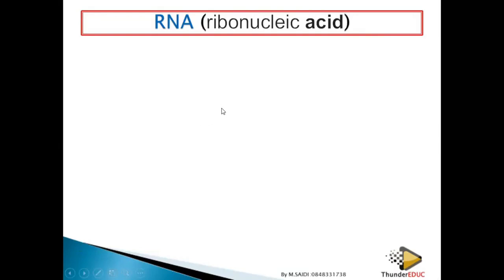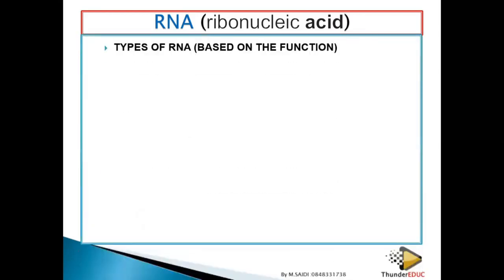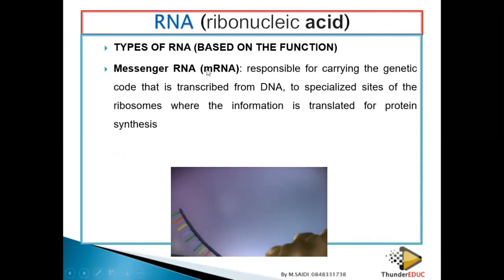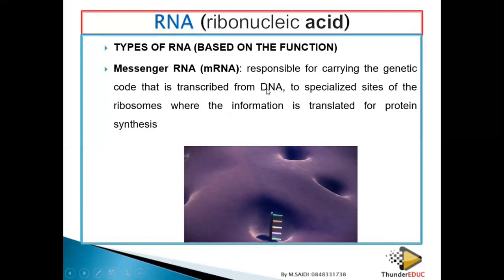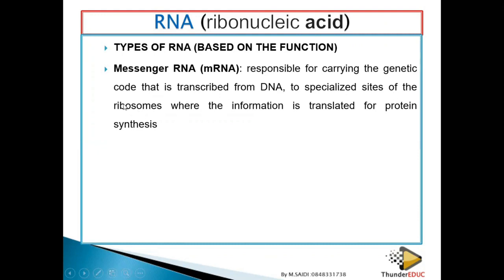Now let's look at RNA — ribonucleic acid. Once we talk about RNA, we begin what is called protein synthesis. RNA and DNA are almost the same but differ in a few aspects — both are nucleic acids. There are three types of RNA based on function. Number one, messenger RNA — it carries genetic information transcribed from DNA and takes it to the cytoplasm or ribosome so that protein synthesis can occur.